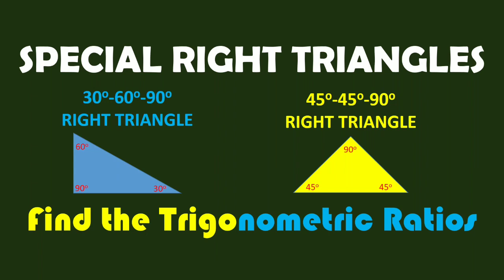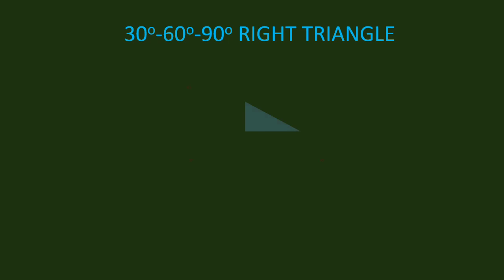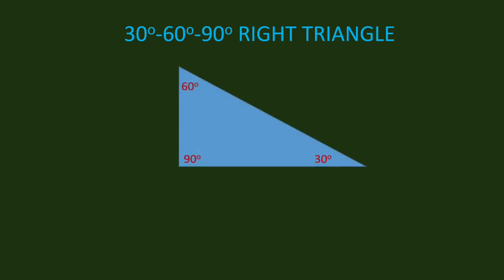Hi there, welcome to Sir Mathego channel. Today I am going to discuss special right triangles. The first special right triangle is the 30-degree, 60-degree, and 90-degree right triangle.